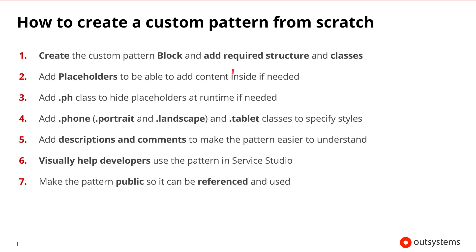Here are the set of steps we should consider when creating a custom pattern from scratch. The first step is to create the custom pattern's block and add the required structure and CSS classes. Then we could add placeholders to define common areas that can hold content if necessary. There may be occasions in which we don't need placeholders because we just have images or CSS within the block. Once this step is complete we can use the pH class to hide placeholders at runtime if needed. Next we should add the phone and tablet classes to specify the styles for the devices that the pattern may be used on.